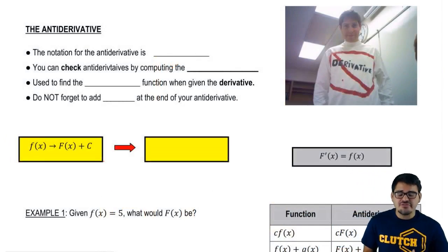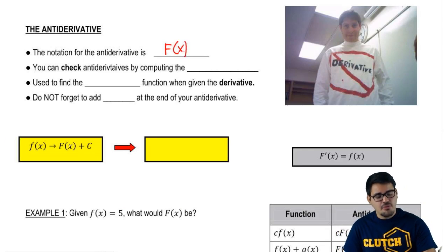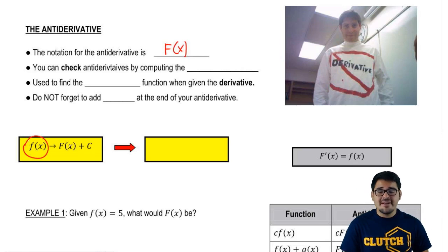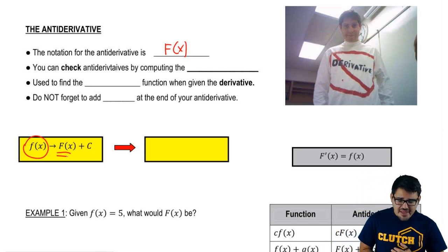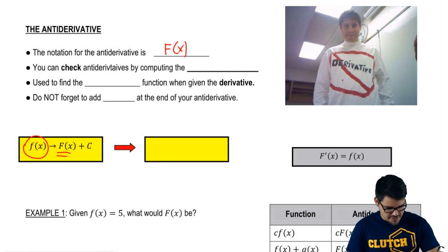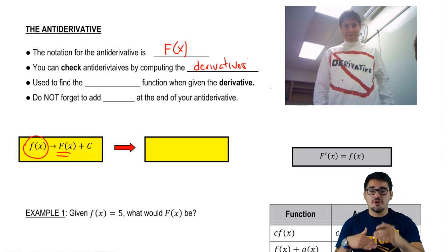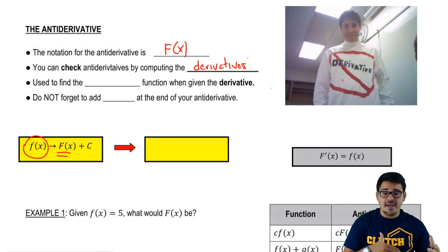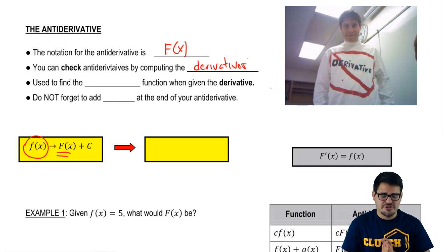The notation for the antiderivative is going to be a capital F. So whenever we normally talk about functions, we have a lowercase f. But now when we talk about the antiderivative, we're going to use capital F. We can check an antiderivative by computing the derivative — taking the antiderivative and then deriving it should give you back the original function.